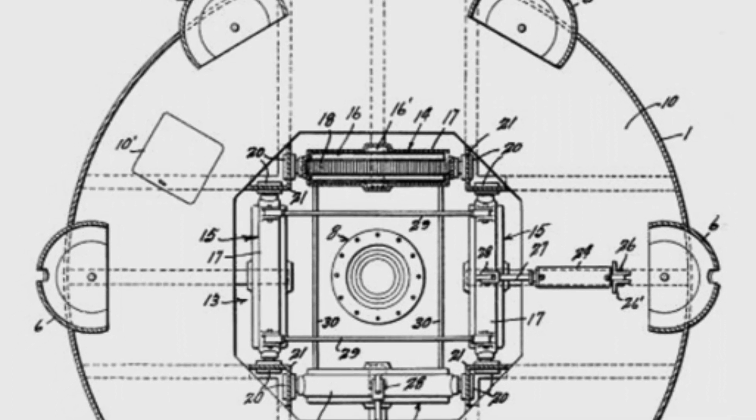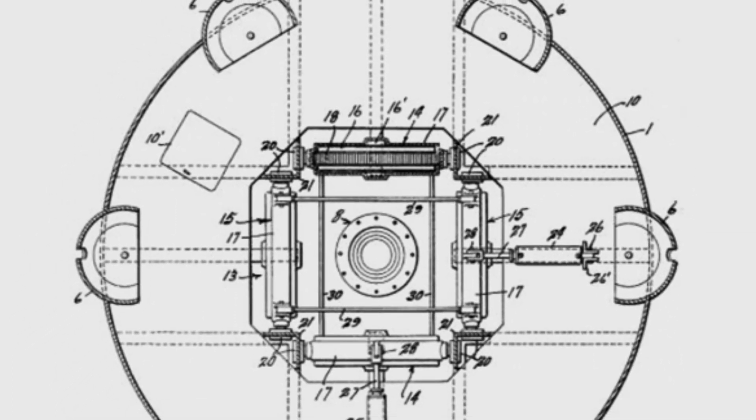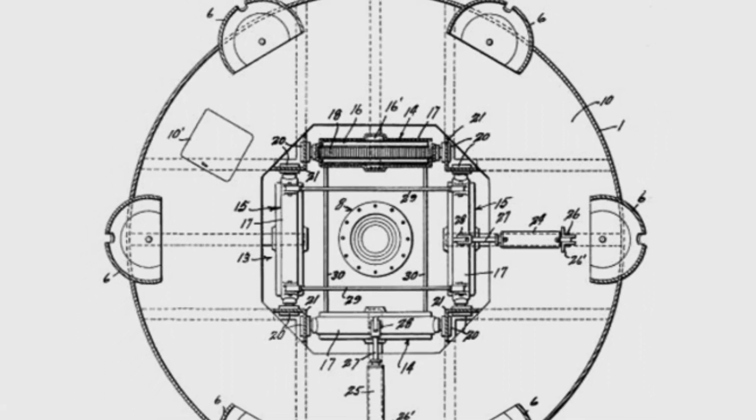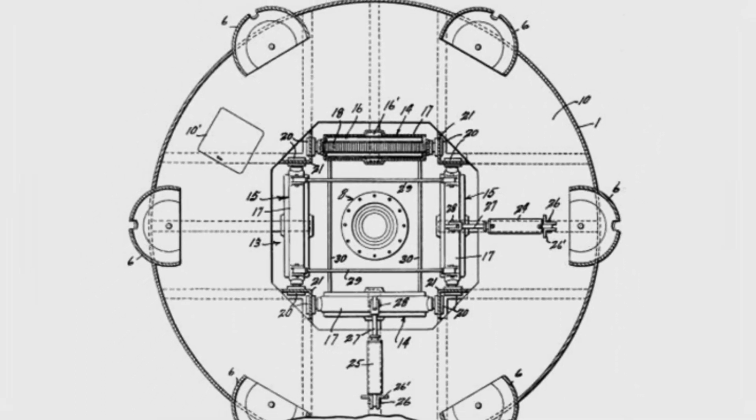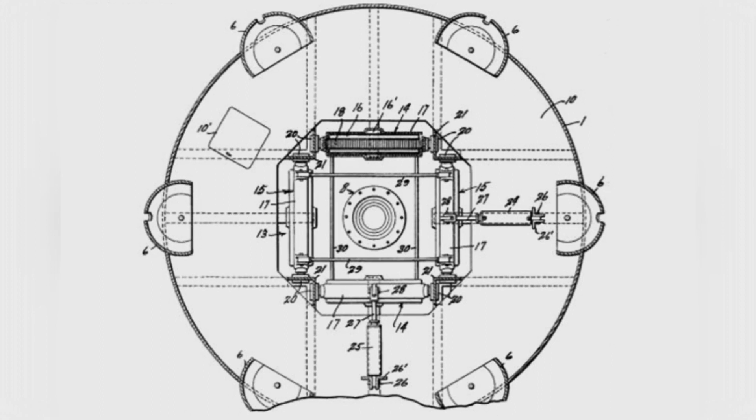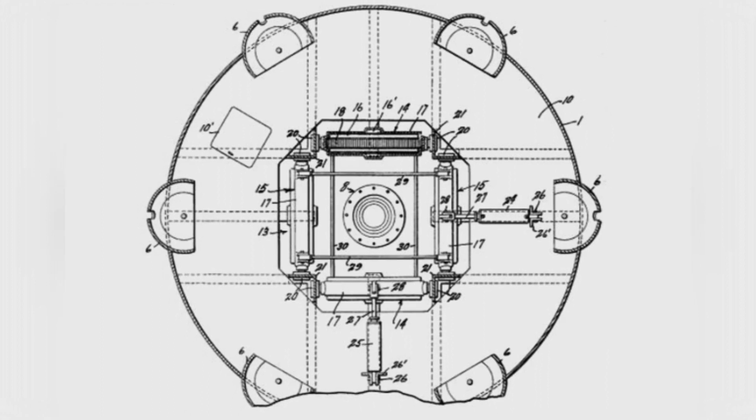This tank does not have a strict definition of front and sides. All of its sides are considered the front and need to face the enemy in any direction. Therefore, the cylindrical hull has evenly distributed armor.